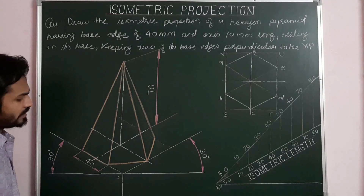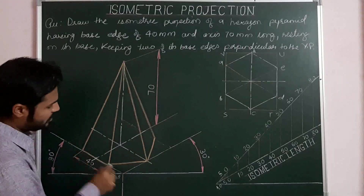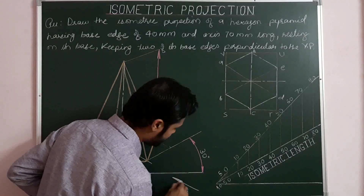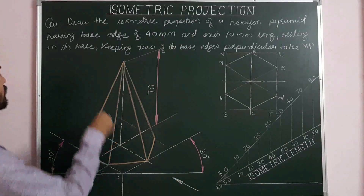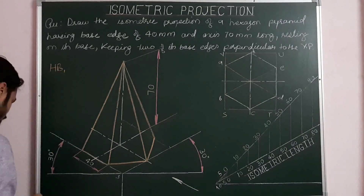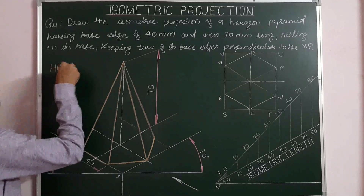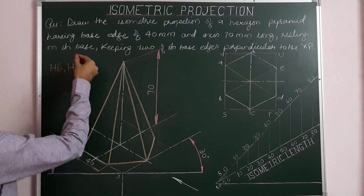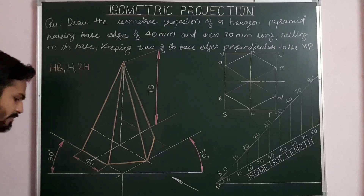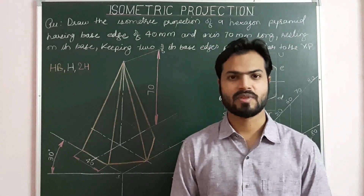The direction of viewing is preferably from the center, partially parallel to the second iso-axis. I now request you to please practice this problem on your sheet. Thank you.